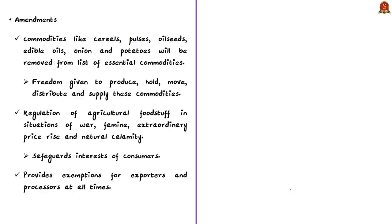The cabinet has approved an amendment to the Essential Commodities Act of 1955. Under this amendment, commodities like cereals, pulses, oilseeds, edible oils, onion, and potatoes will be removed from the list of essential commodities. Freedom is ensured to produce, distribute, or supply these commodities, removing fears of private investors. This is expected to lead to economies of scale, attract private sector or foreign direct investment into agriculture, and drive up investment in cold storage and modernization of food supply chains.